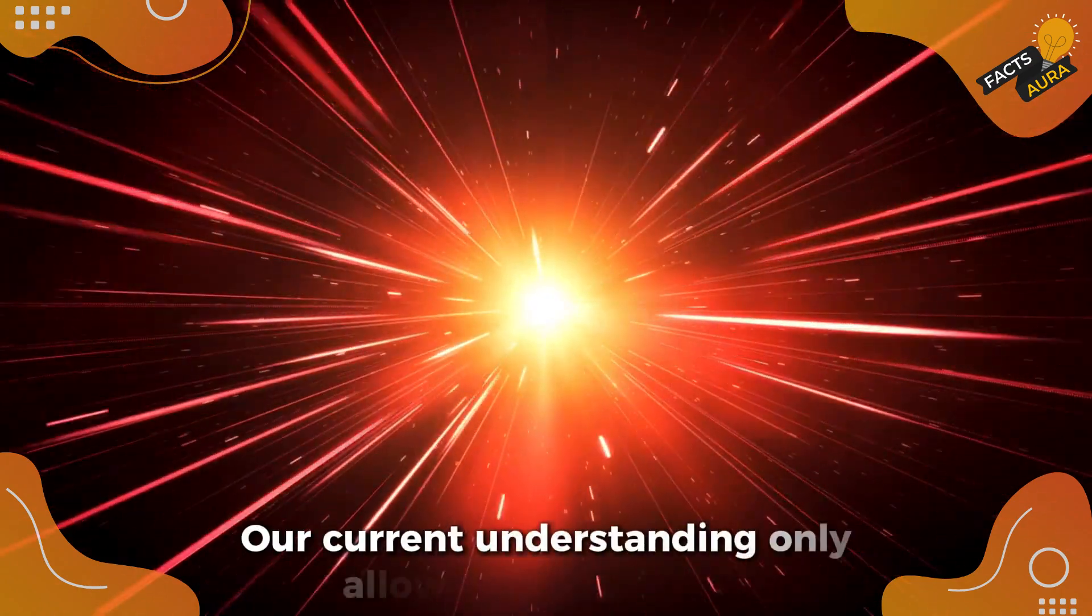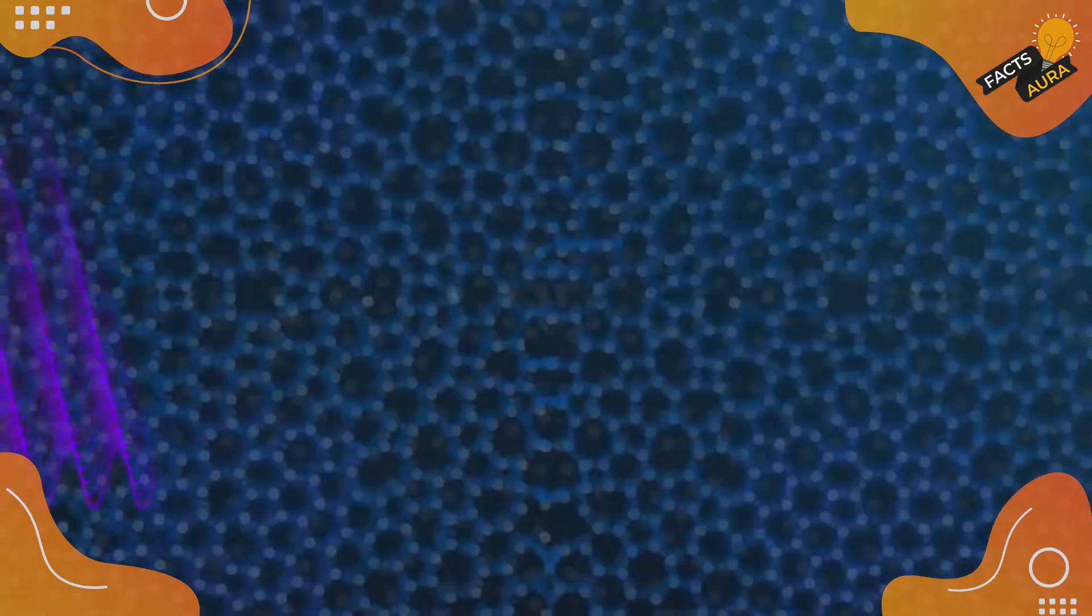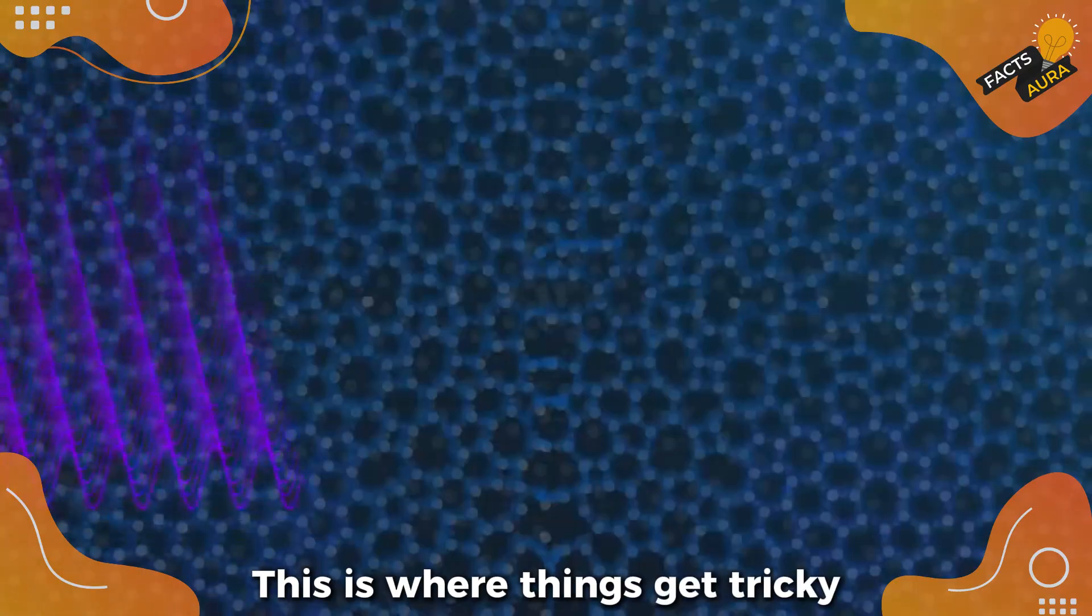But even then, our current understanding only allows us to measure the round-trip speed—light going out and reflecting back. This is where things get tricky.